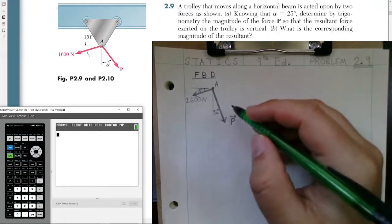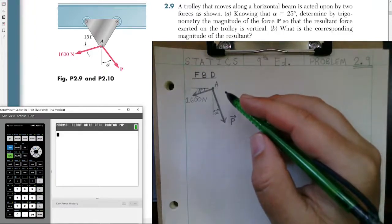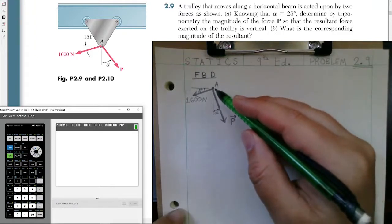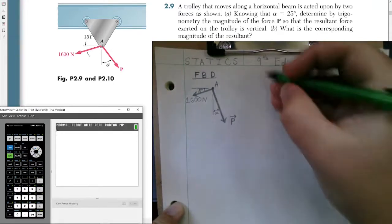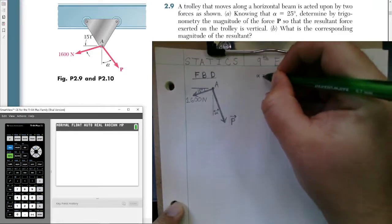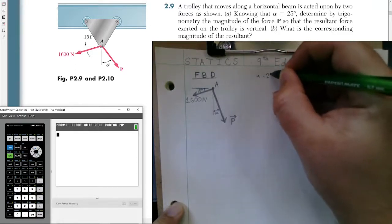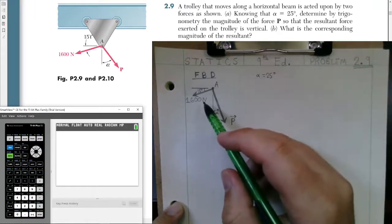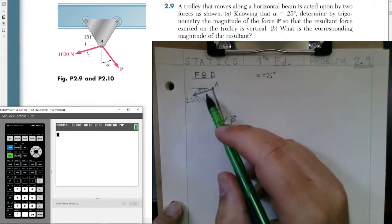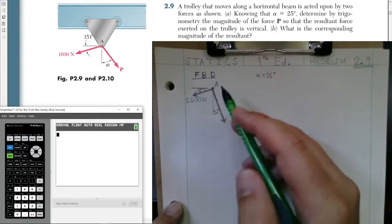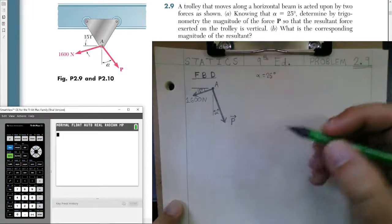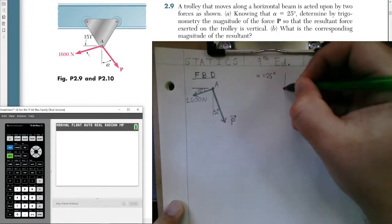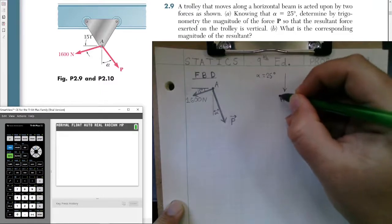So as you can see, I've gone ahead and drawn a free body diagram for our trolley. It has force P acting at an angle down the vertical at an angle of alpha, and that's given to us as 25 degrees. And it has a force of 1600 newtons as well acting off the horizontal at 15 degrees going to the left and down. So we know that the resultant is going to be vertical. Alright, so our resultant force, I'll just draw it here, just to give a representation of it.